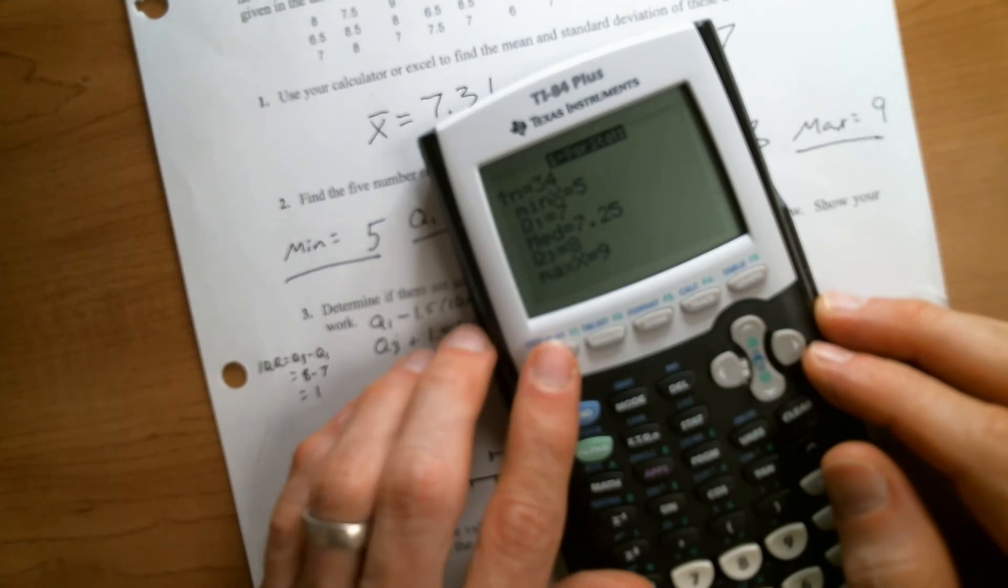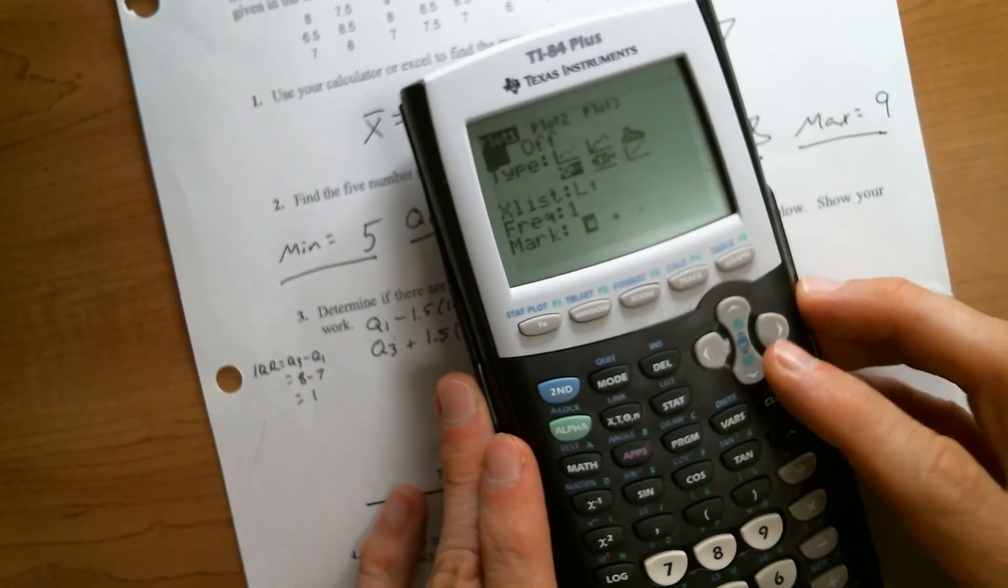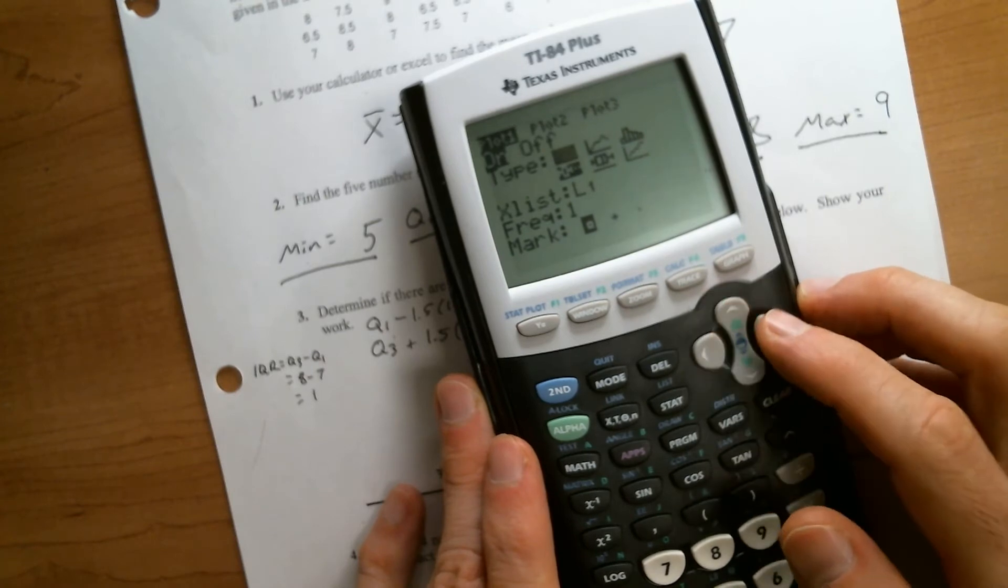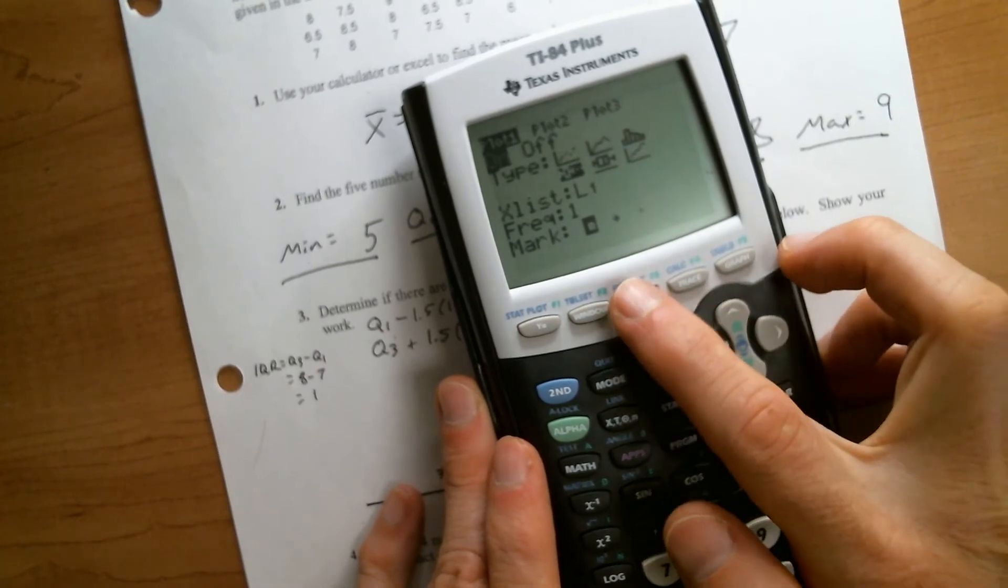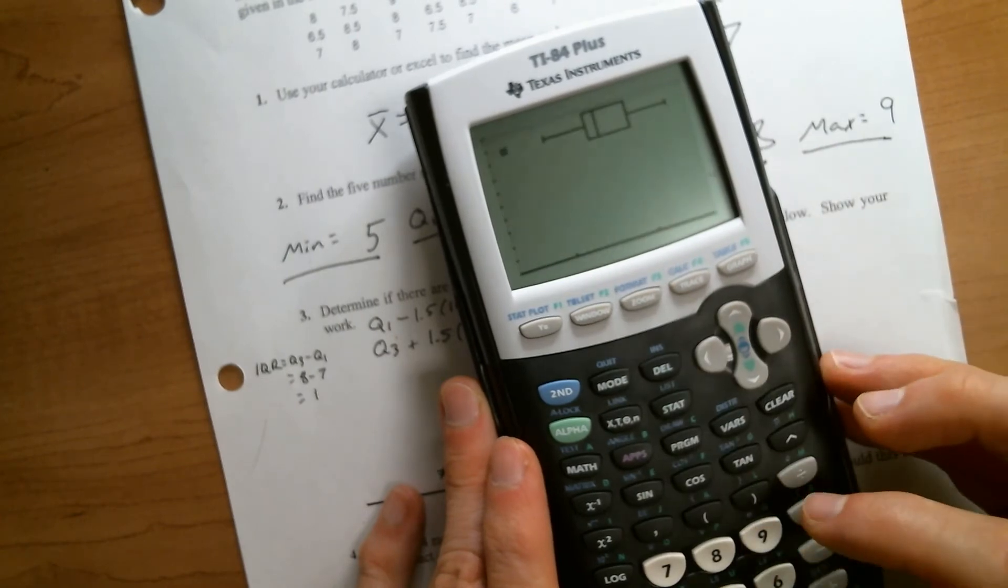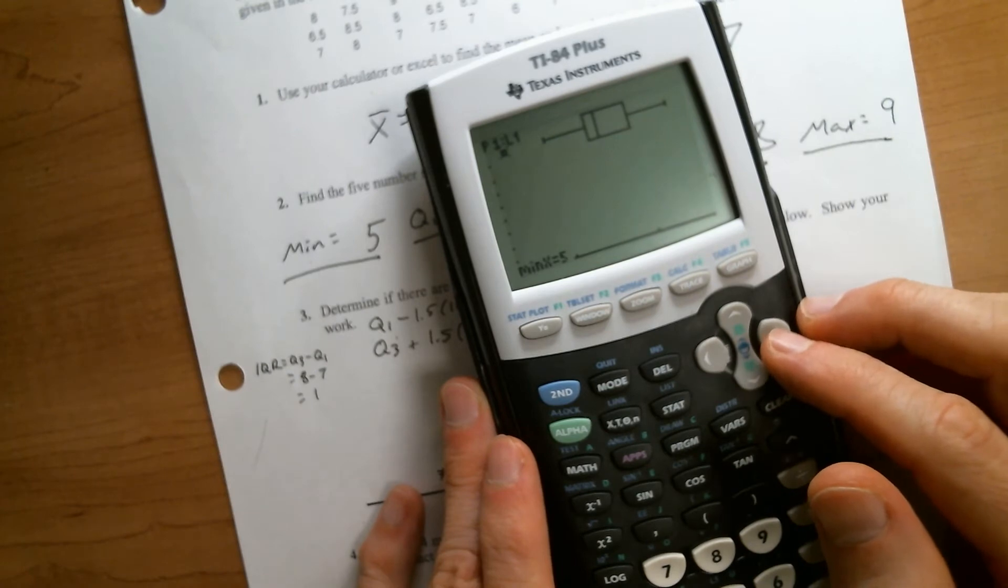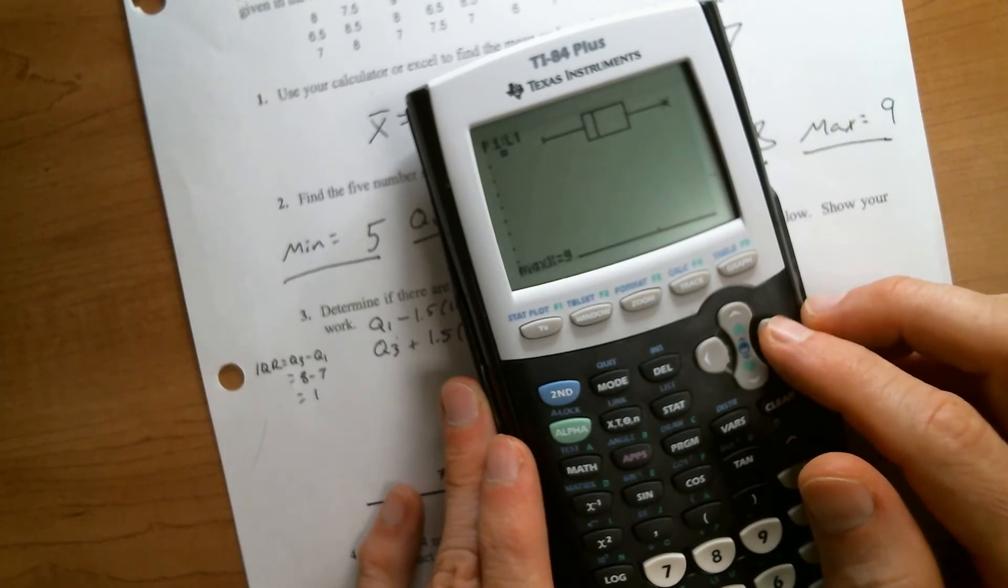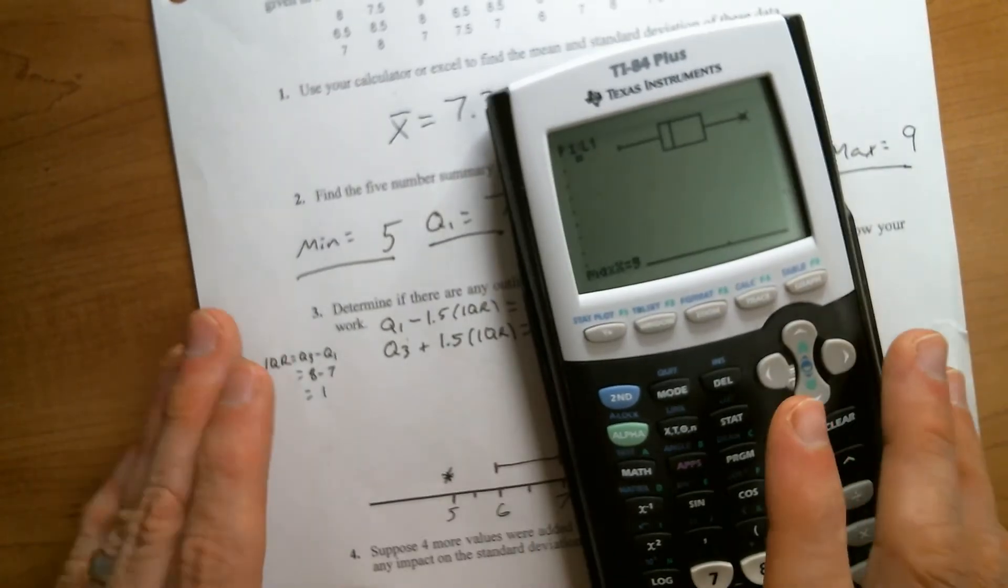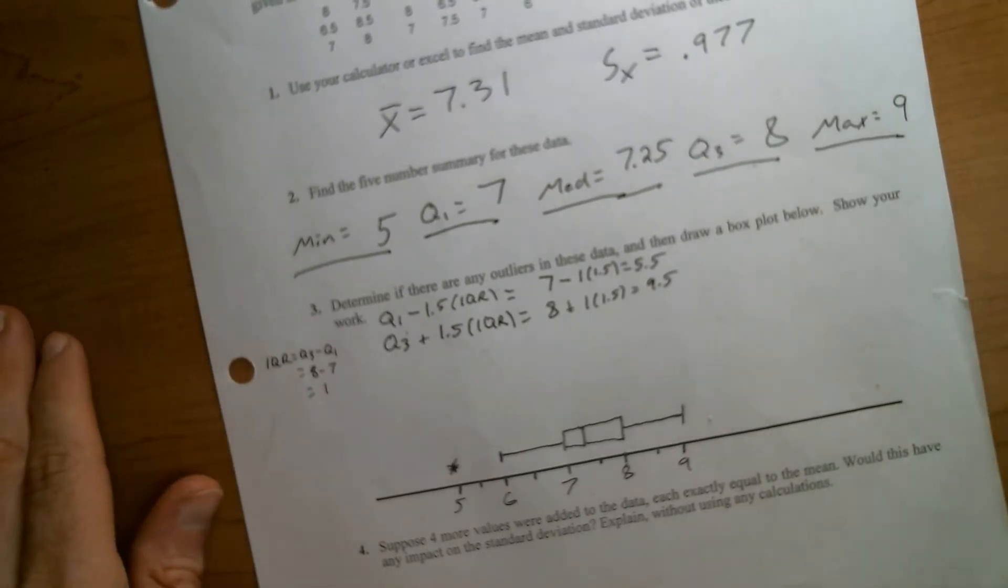So I can go to stat plot. Make sure that stat plot 1 is on. Make sure that you've selected the box and whisker that has the little dots with it. Then you can go to zoom 9, and there's that box plot. And if you hit trace, you can see, there's the asterisk outlier at 5. There's the lowest non-outlier at 6. There's 7, 7.25, 8, and 9, just like we did by hand.